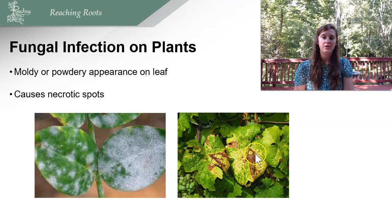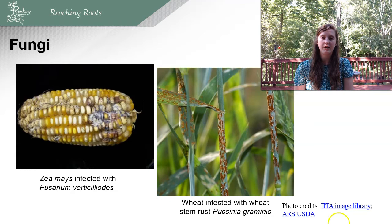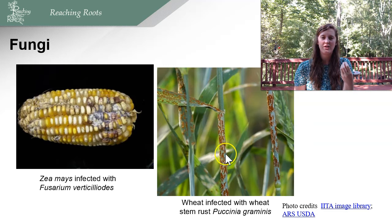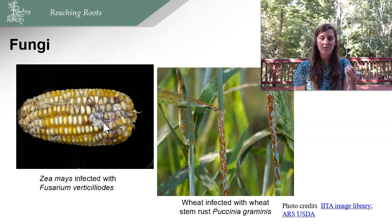Fungi can also cause other issues. Stem rust pathogen infects a plant and erupts the stem with fungal spores — this is how the fungus spreads and causes huge damage to wheat. Another example shows a fungus attacking corn kernels — this not only damages the corn but also produces a toxin within the infection that can cause harm to humans or animals that eat that corn.